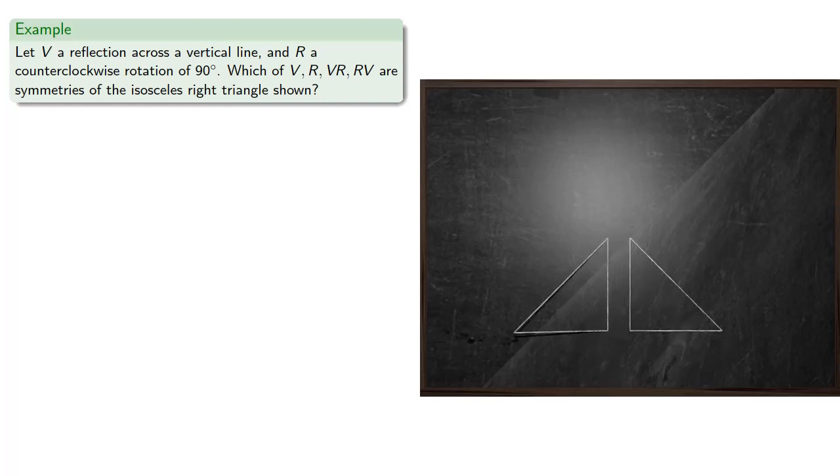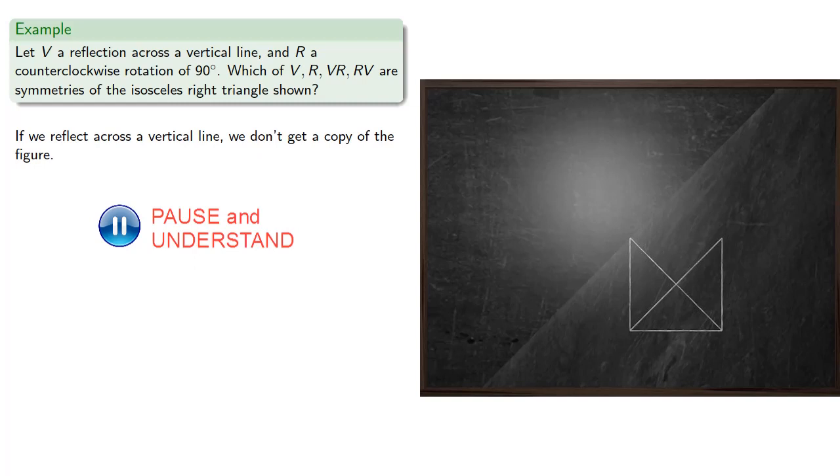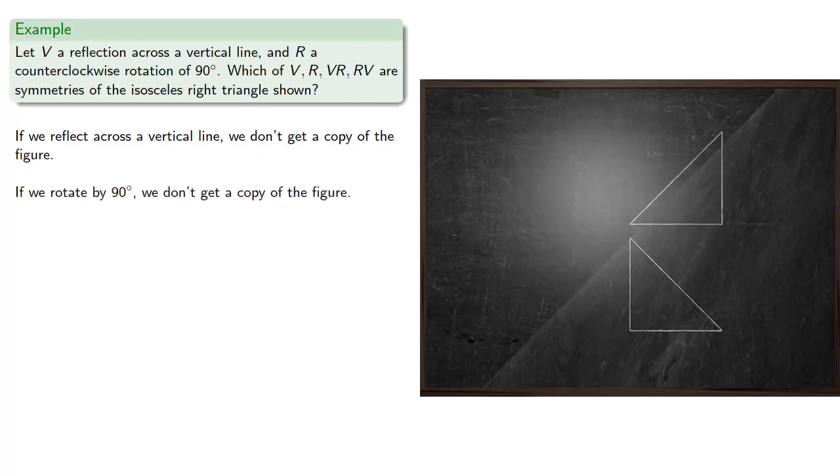If we reflect across a vertical line, we don't get a copy of the figure. If we rotate by 90 degrees, we don't get a copy of the figure.